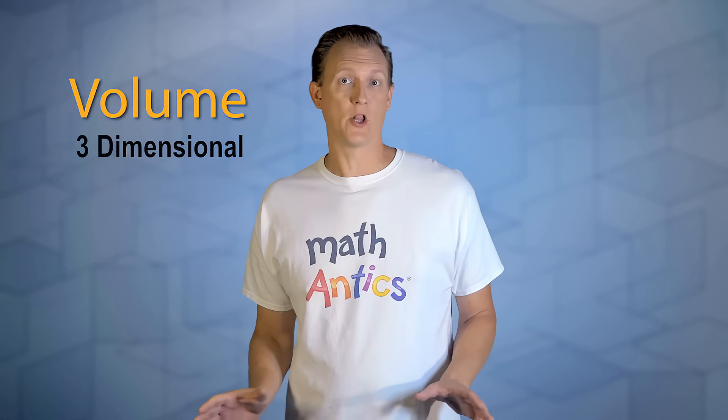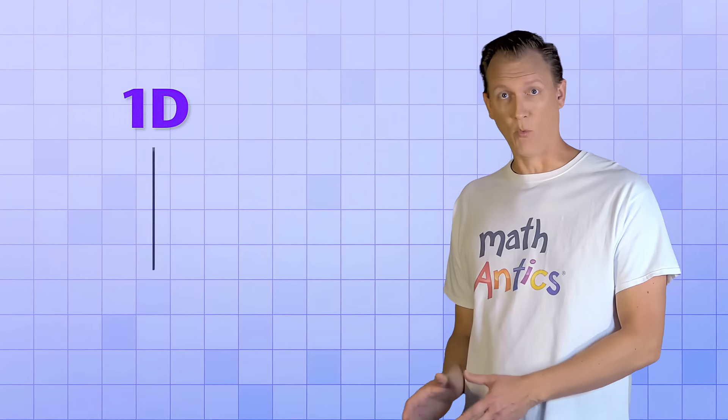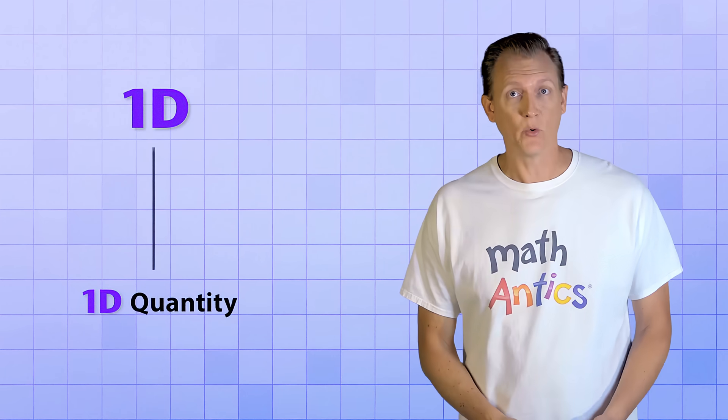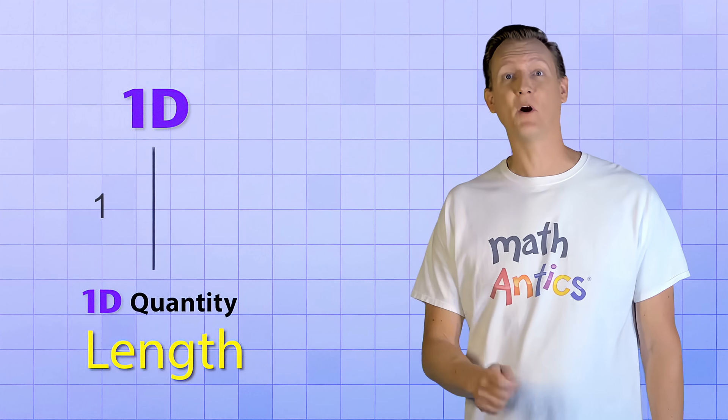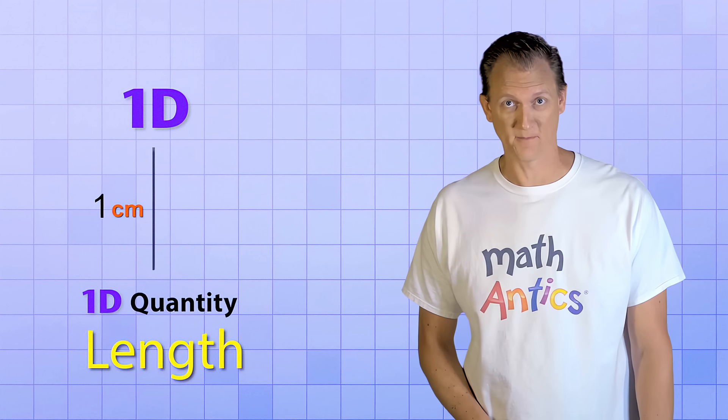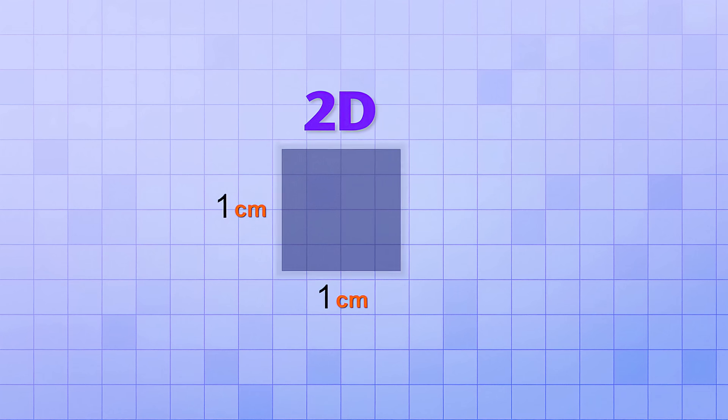Volume is a quantity that all three-dimensional objects have. To understand what it means, it helps to start with a one-dimensional object, like a line segment. To measure a one-dimensional object, we need a one-dimensional quantity which we usually call length. The length of this line happens to be exactly one centimeter, which is a common unit for measuring length. If we move or extend this one-dimensional line in a direction perpendicular to it by a distance of one centimeter, it forms a two-dimensional object called a square.